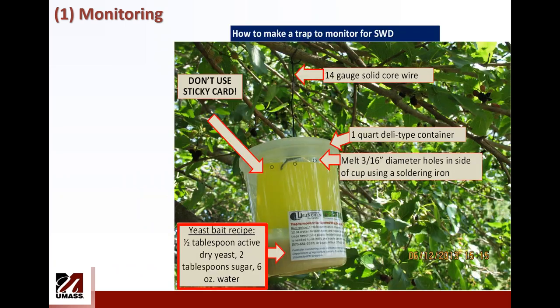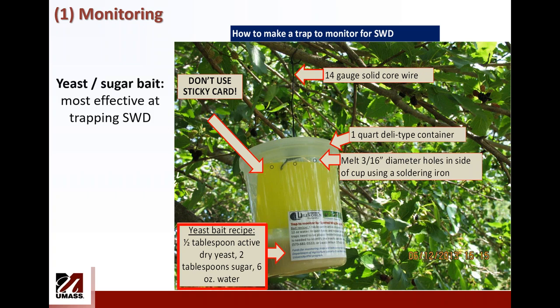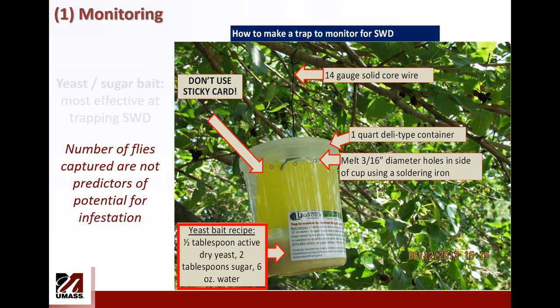The first step is monitoring. The easiest and cheapest way to monitor for spotted wing drosophila is using traps baited with yeast sugar bait — it's effective but messy. You don't need to include sticky cards anymore; that was done many years ago. However, this material attracts many non-target insects because they respond to fermenting materials, so growers don't really use yeast and sugar bait even though it's very effective. Keep in mind that no matter what lure or bait you use, the number of flies captured are not predictors of the level of infestation.